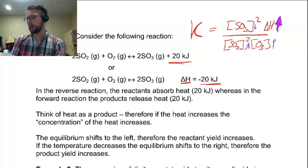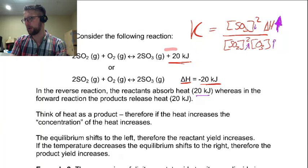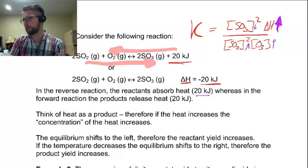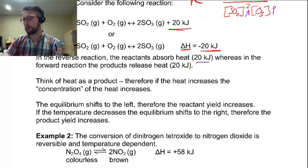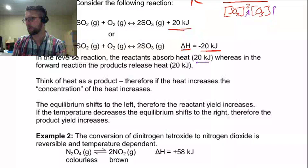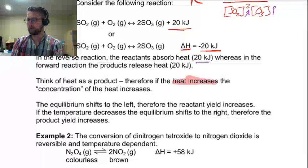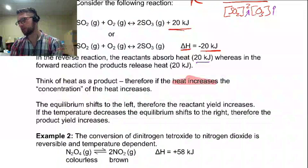In the reverse reaction, the reaction absorbs 20 kilojoules, whereas in the forward reaction the reaction releases 20 kilojoules — so going this way it's an absorption, going this way it's a release. When we apply heat to the system, think of the heat as a product. Therefore, if the heat increases — if you increase the temperature — the concentration of heat increases, so the equilibrium will shift left. The reactant yield will increase. If the temperature is decreased, then the equilibrium will move to the right.